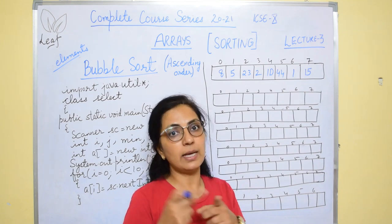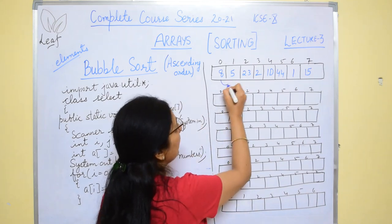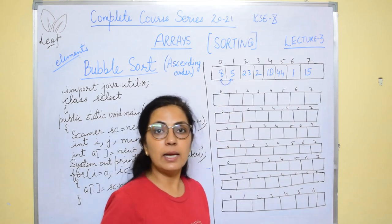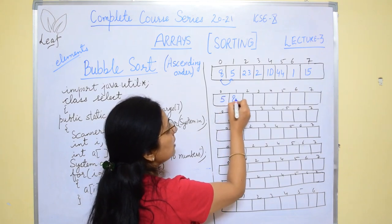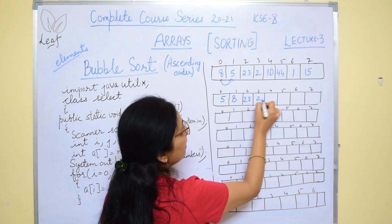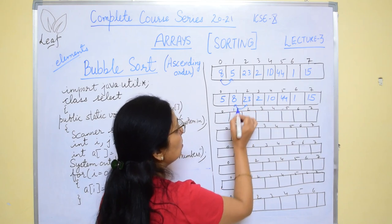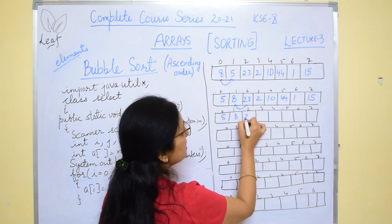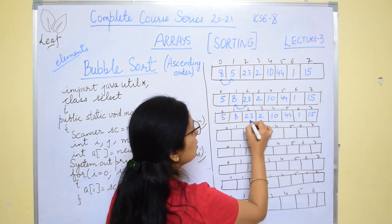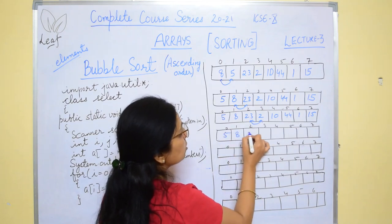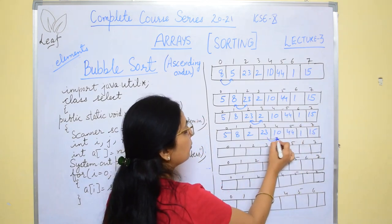This continuous swapping takes place anytime the condition is true — the next element is smaller, then you do the swapping. So first: 8 and 5 — if sorting in ascending order, 5 is small, so swapping is done right then: 5, 8. Remaining items stay the same. Then these two — no change, it remains 23. Then 23 and 2 — yes, 2 is small, so it will be replaced at that time. Then 10 will come here, 23 goes there.